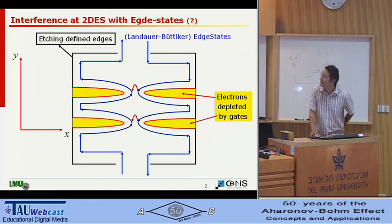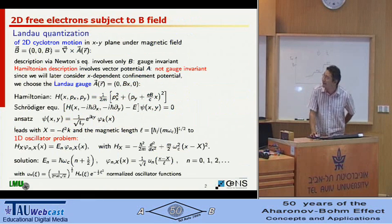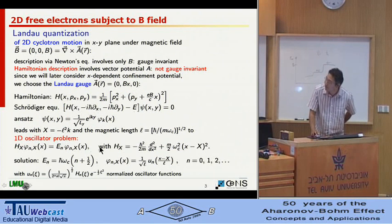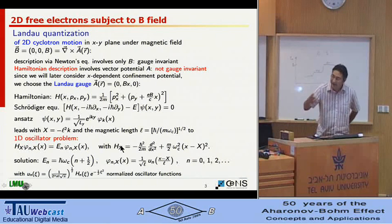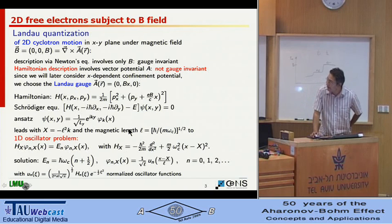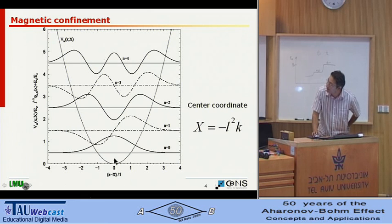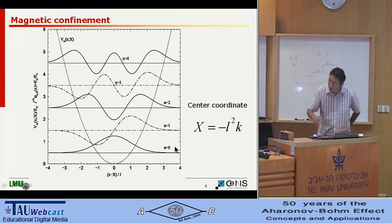I spent about seven years and I still don't understand what they are. So let's start from Landau quantization. This is simple mathematics: you can reduce the two-dimensional problem to a one-dimensional oscillator problem, then finally you have many-fold degenerate Landau levels, and then you can plot your magnetic confinement with a certain center coordinate defined by the momentum in the y-direction.